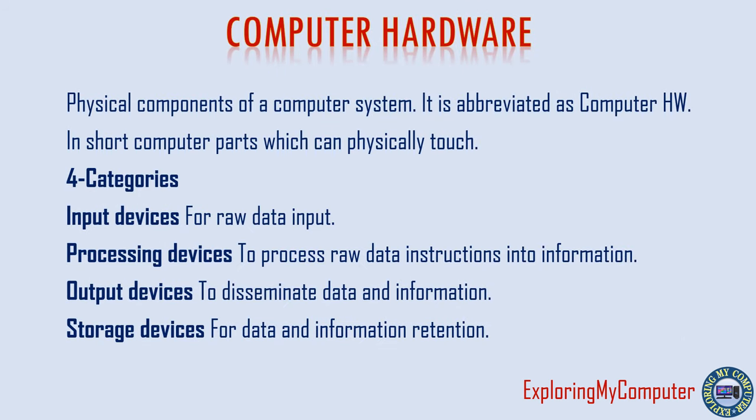Computer hardware refers to the physical components of a computer system, abbreviated as HW. In short, computer parts which you can physically touch. There are 4 categories: input devices for raw data input, processing devices to process raw data into information, output devices to disseminate data and information, and storage devices for data and information retention.